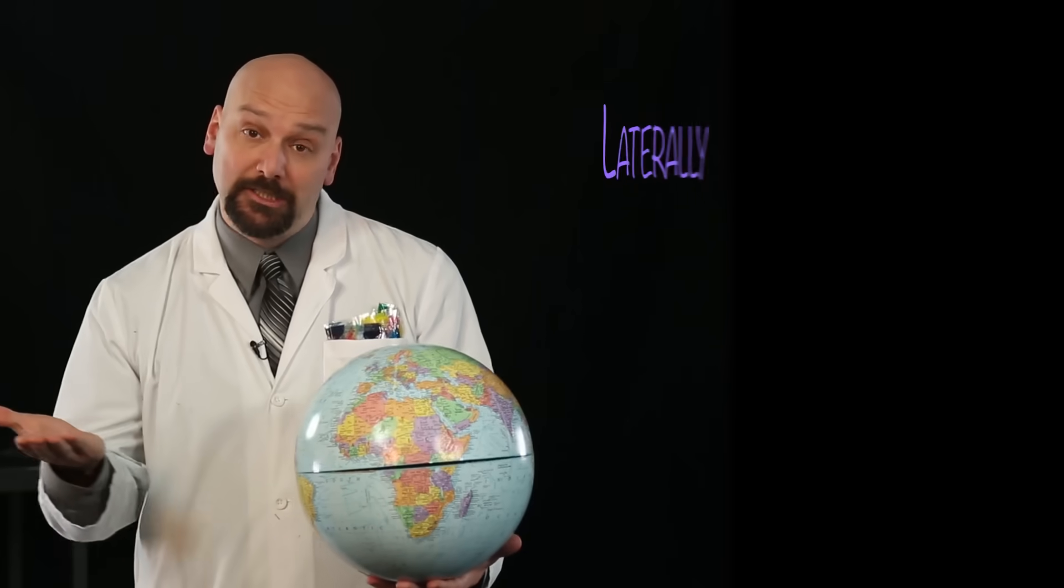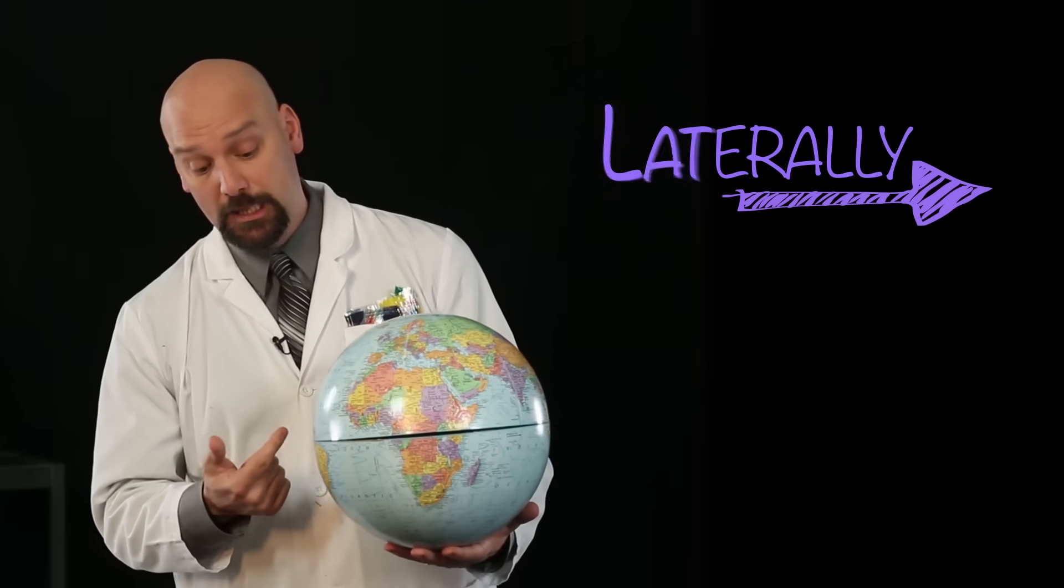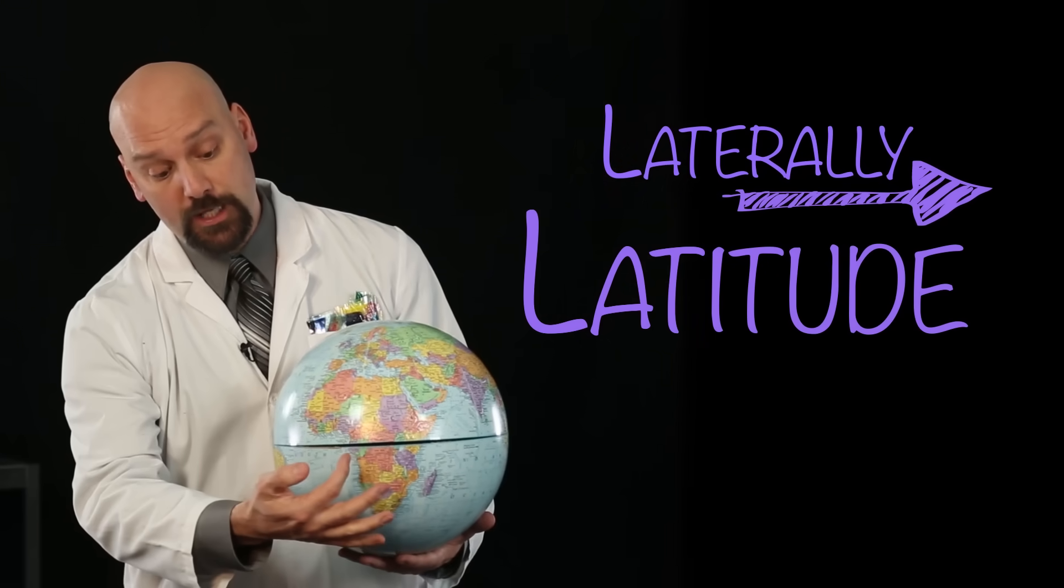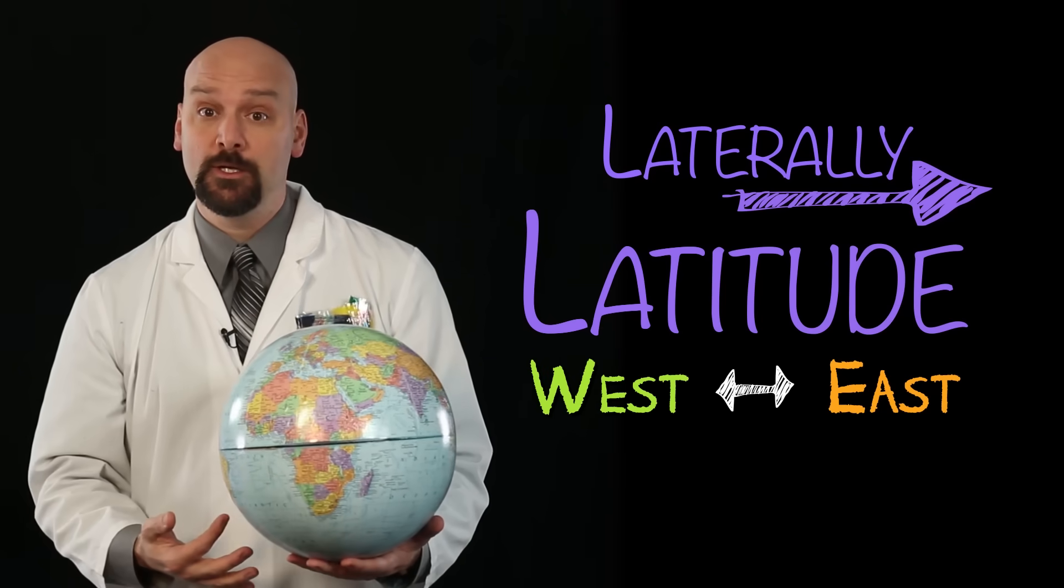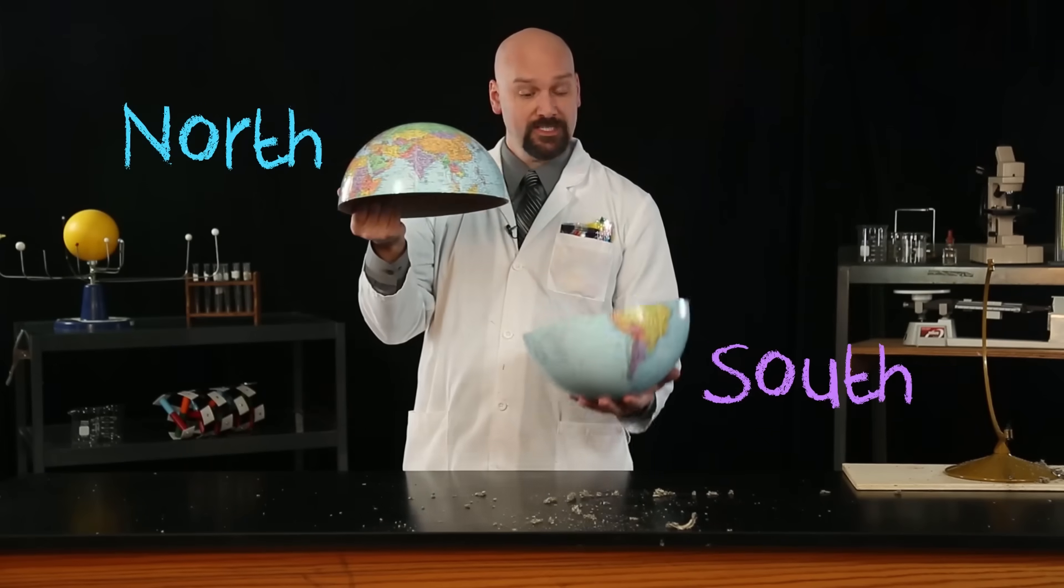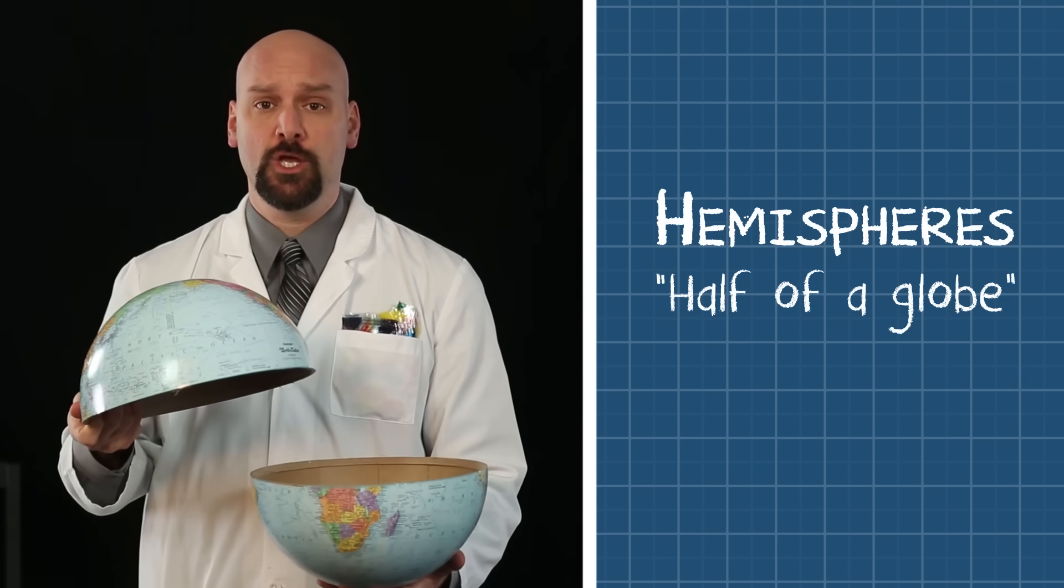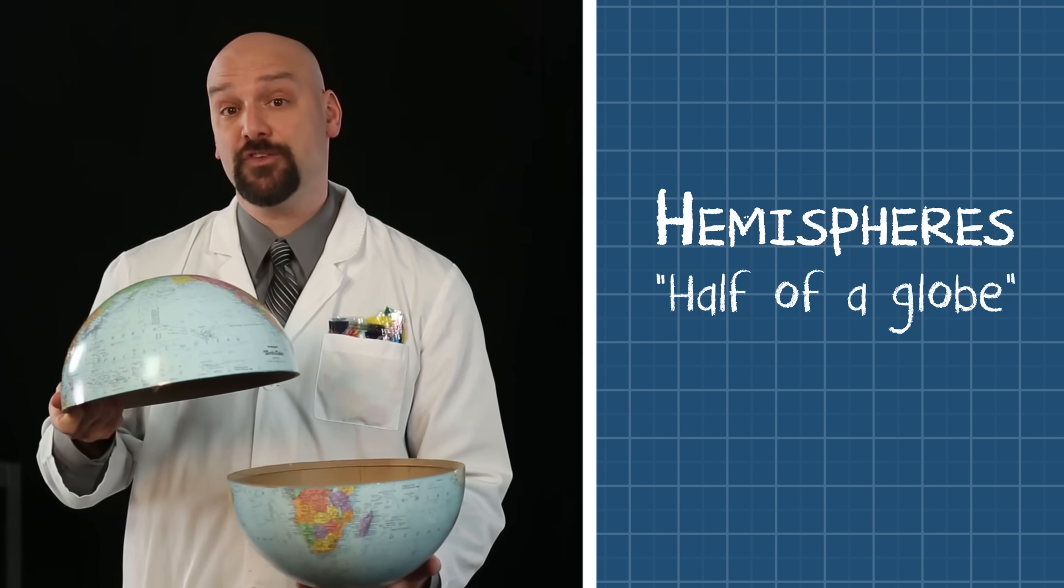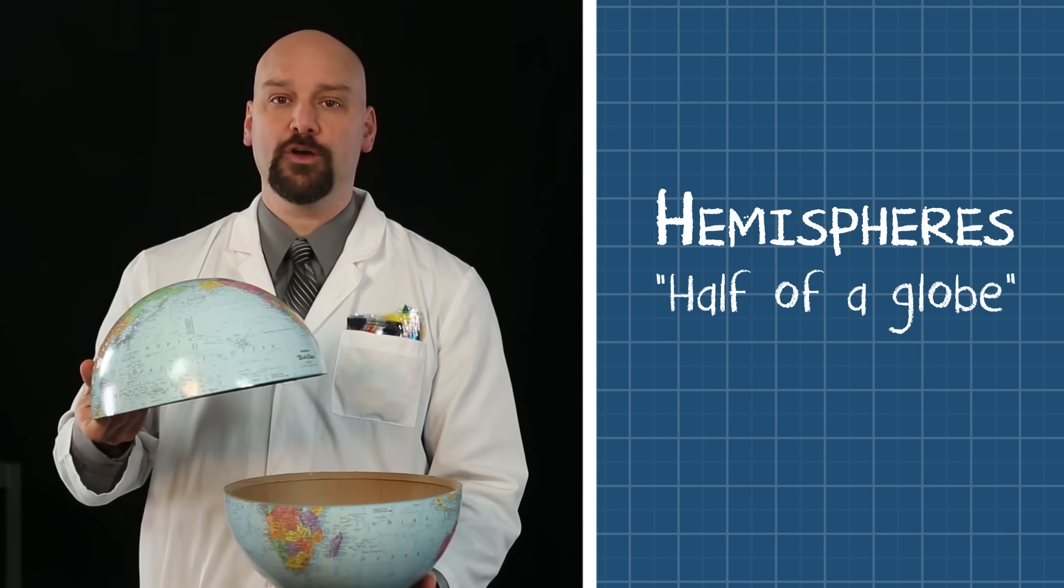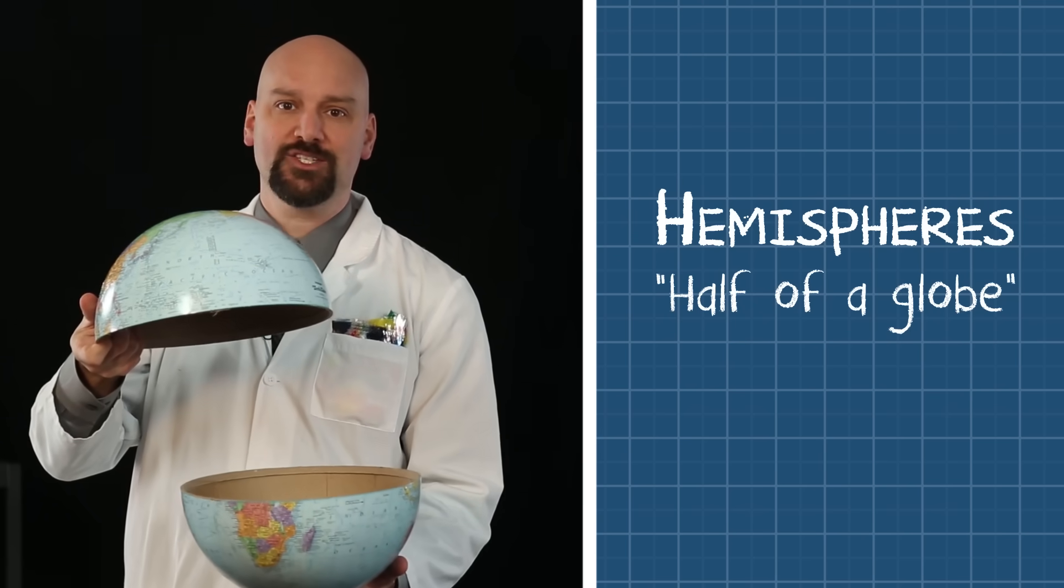You see, I cut laterally to create latitude lines. These lines go from east to west, but they separate north and south. These two halves are called hemispheres, which means half a sphere or half a globe, north and south.